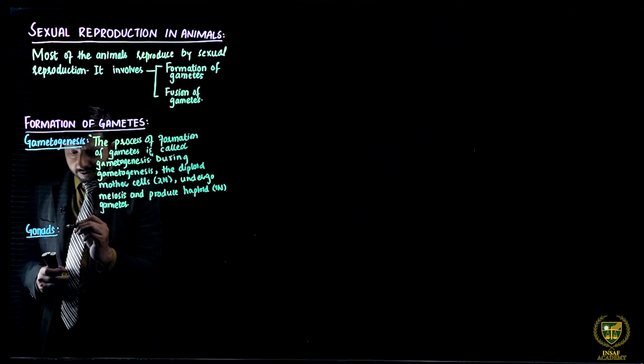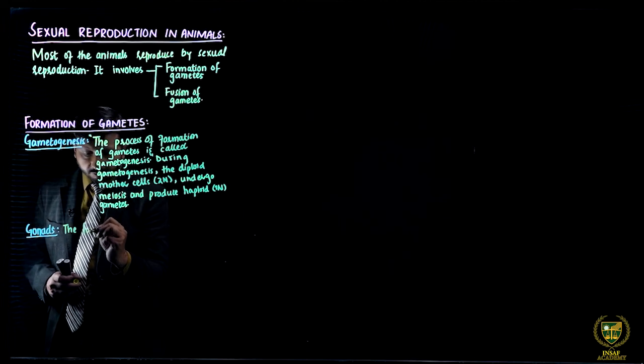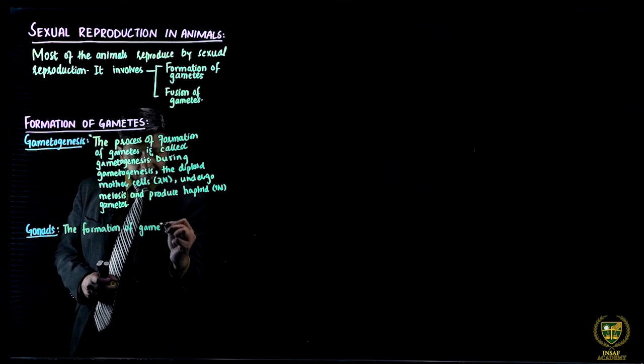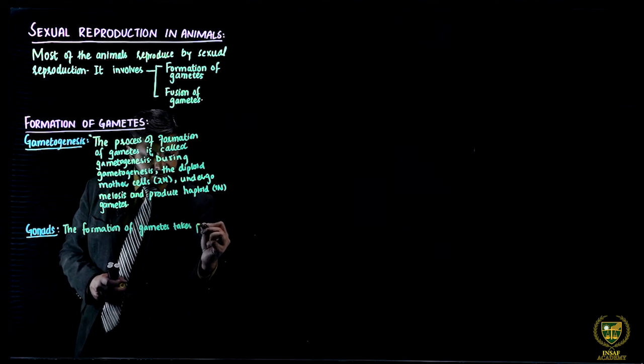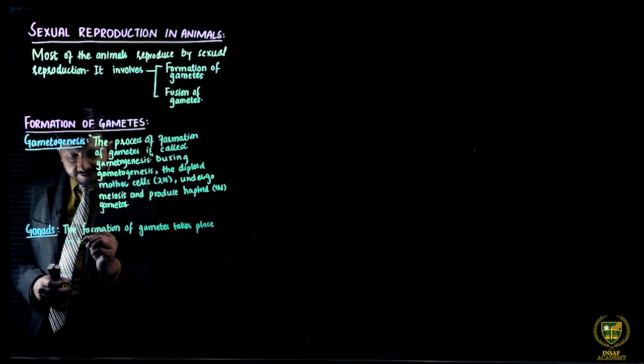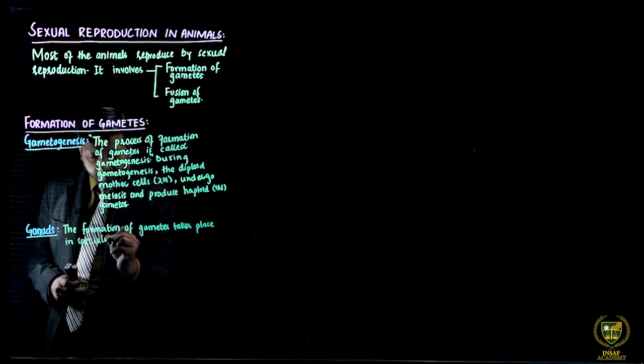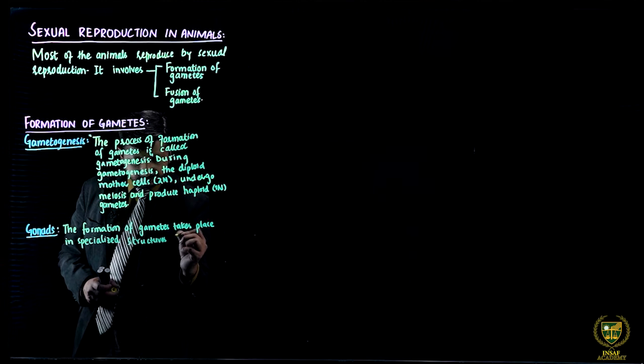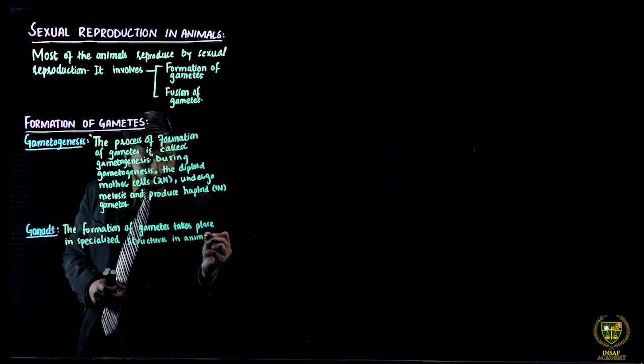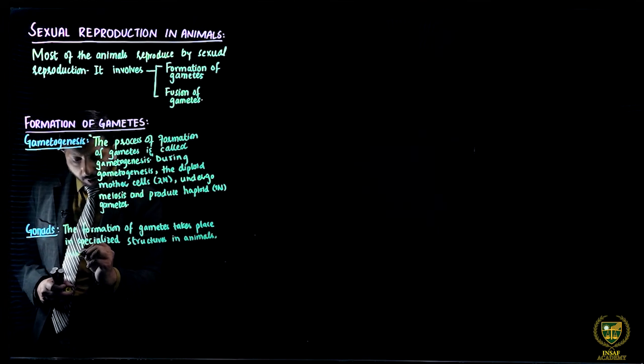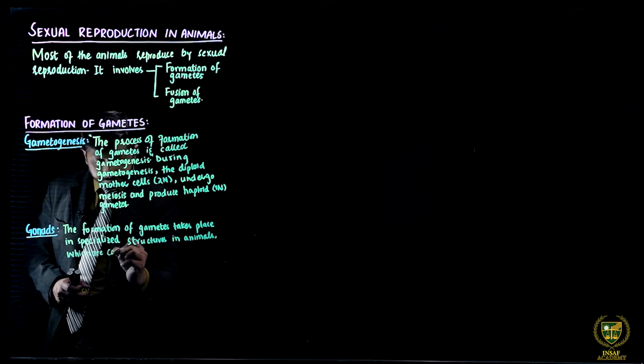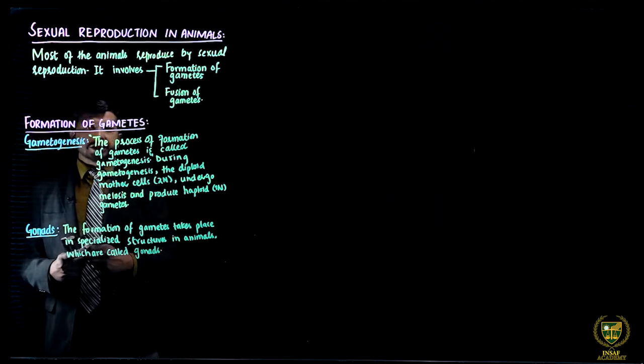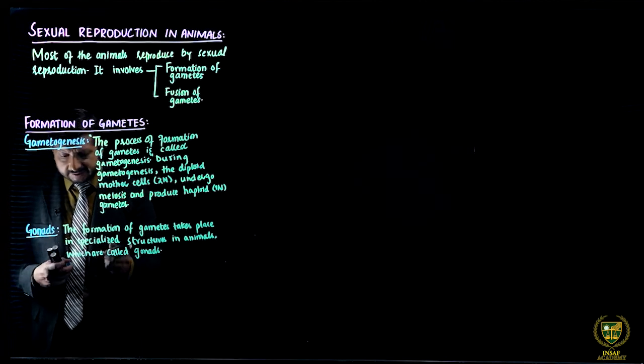These haploid gametes are formed in the specialized structures which are called gonads. So what are gonads? The formation of gametes takes place in specialized structures in animals which are called gonads.